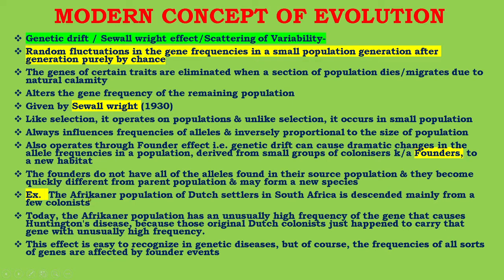For example, the Afrikaner population of Dutch settlers in South Africa is descended mainly from a few colonists. Today, the Afrikaner population has an unusually high frequency of the gene that causes Huntington's disease, because those original Dutch colonists happened to carry that gene with unusually high frequency. This effect is easy to recognize in genetic diseases, but of course the frequencies of all sorts of genes are affected by founder events.